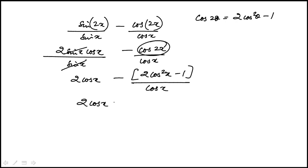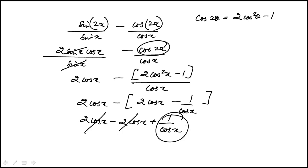This becomes 2 cosine x, divide each term and keep the parentheses here: 2 cosine x minus 1 over cosine x. When I distribute the minus, those first two terms drop out. I'm left with 1 over cosine x and that is indeed in the answer choice, which is A.